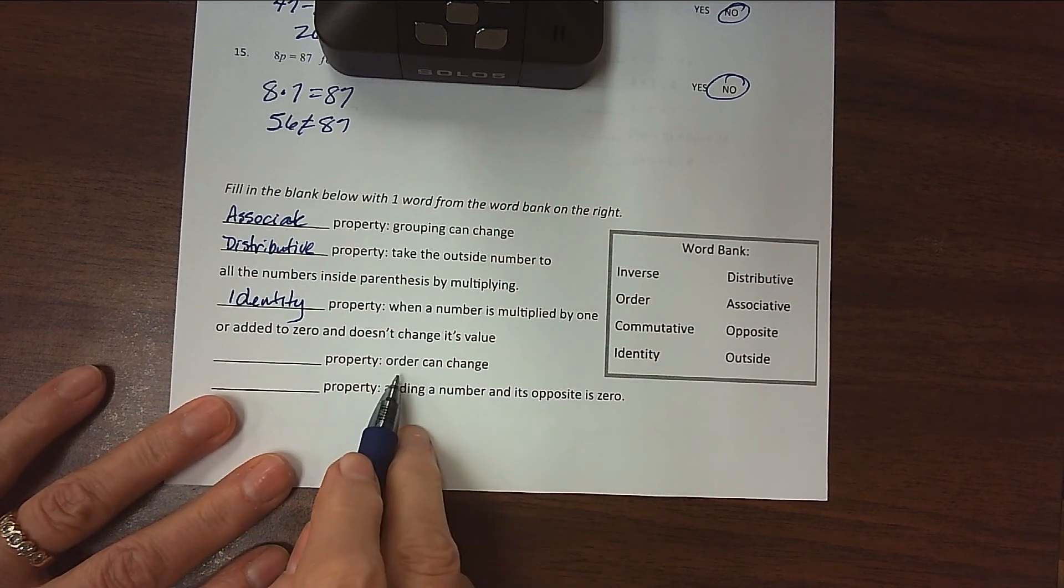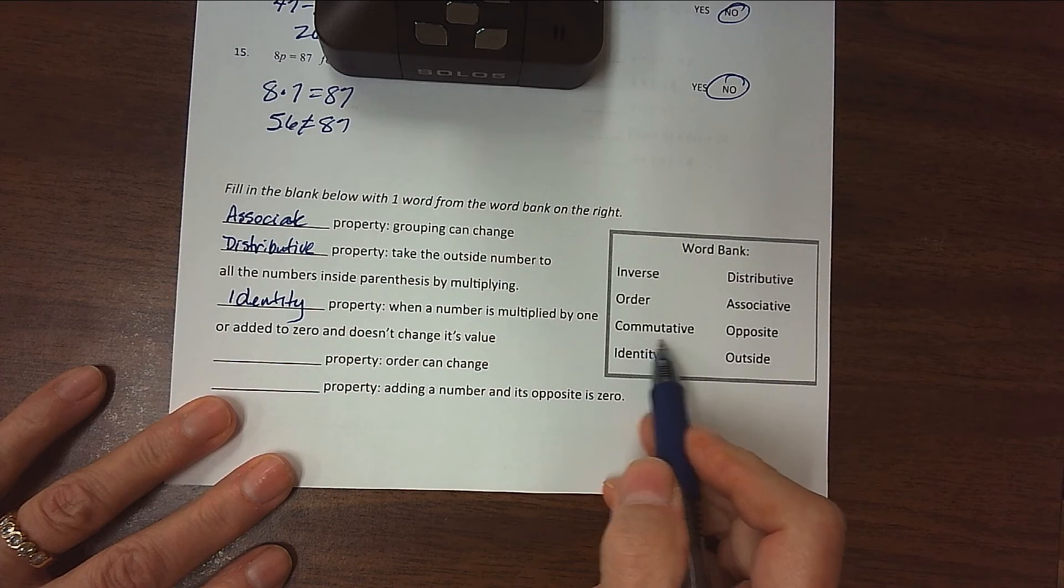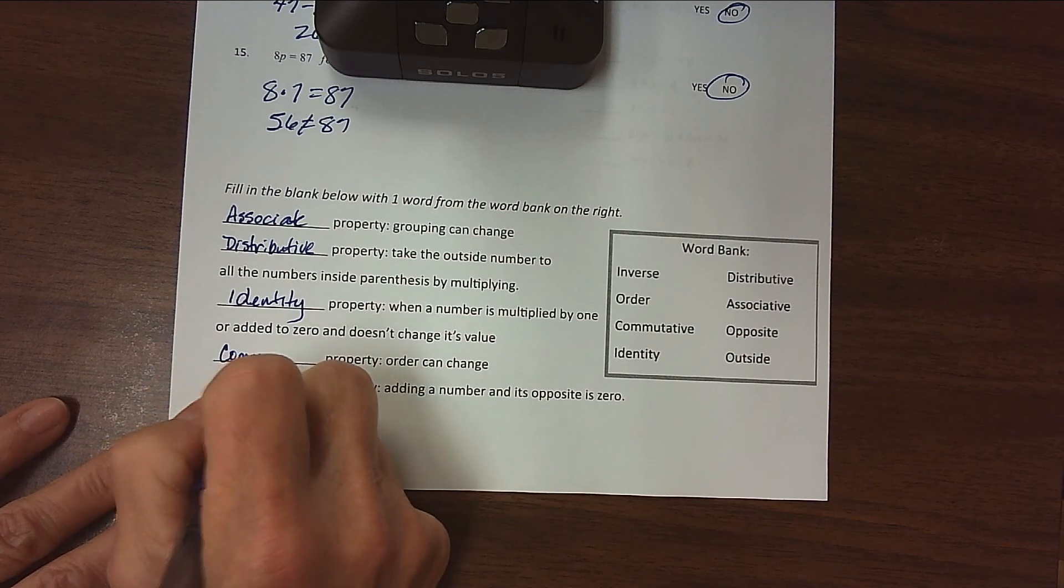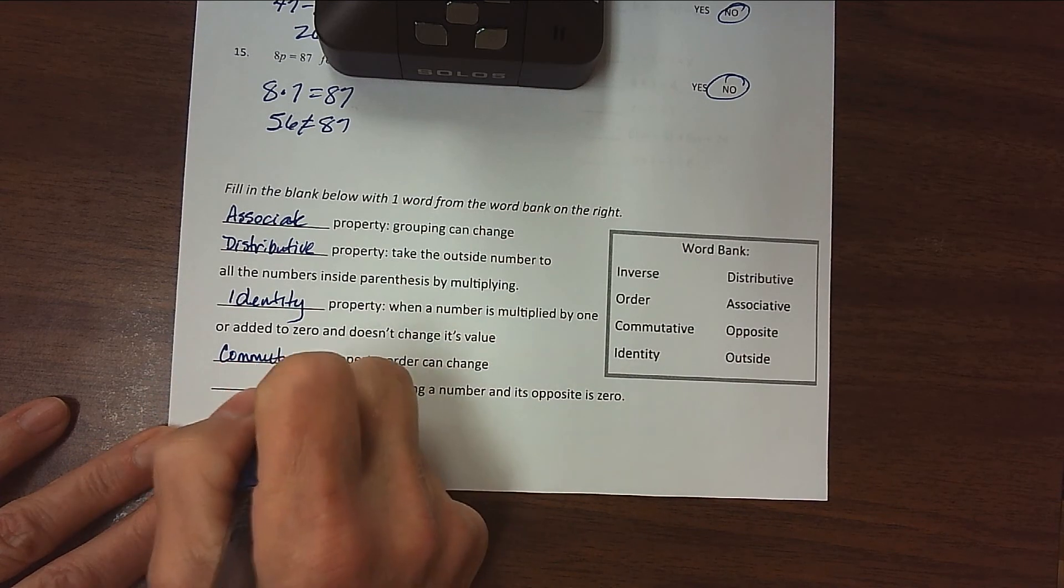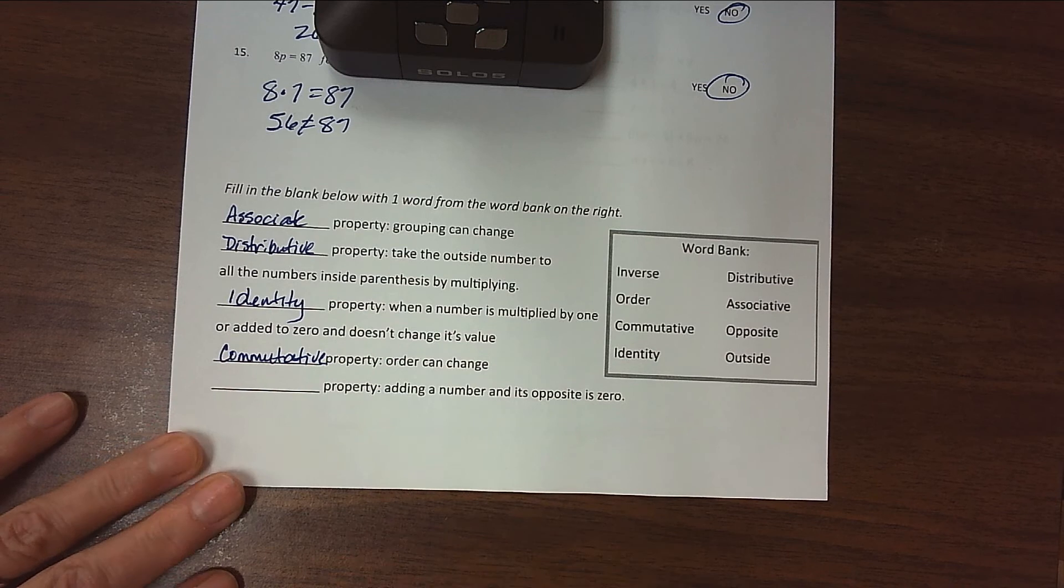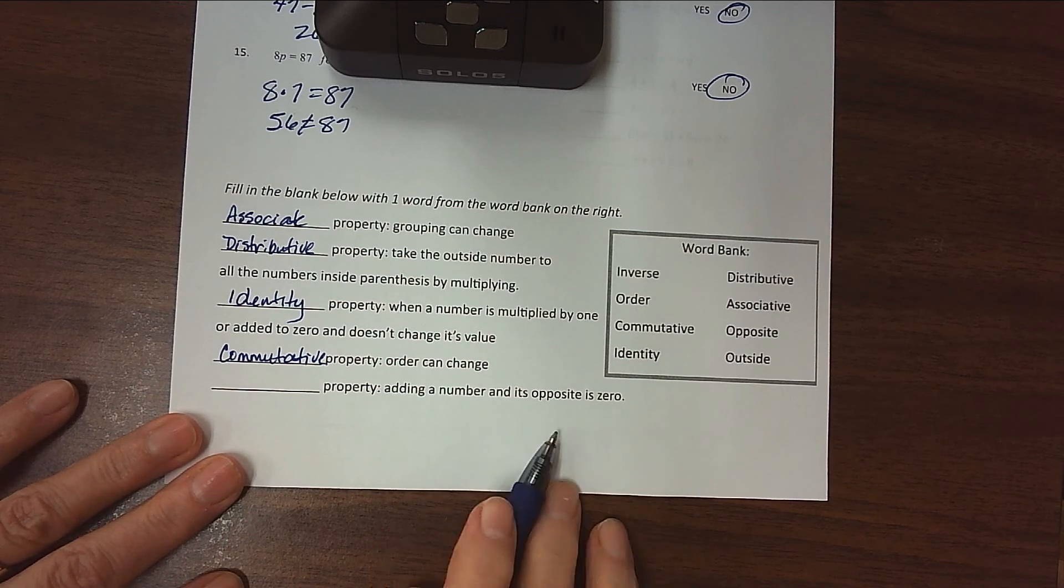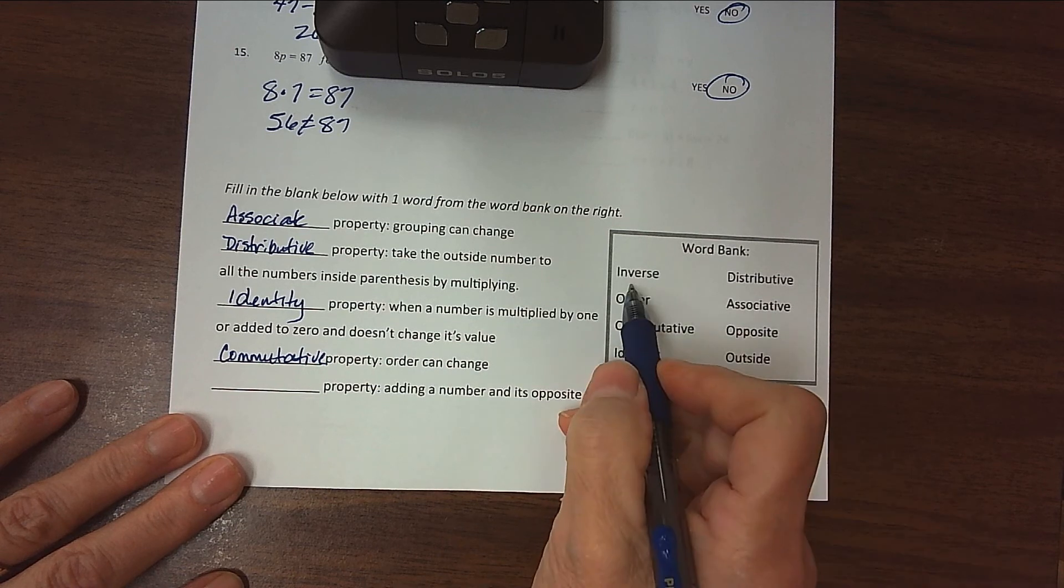The property where order can change is the commutative property. Think about commuting back and forth to school - the order changes. Commutative means we move locations. The property where adding a number and its opposite is 0, that's the inverse property.